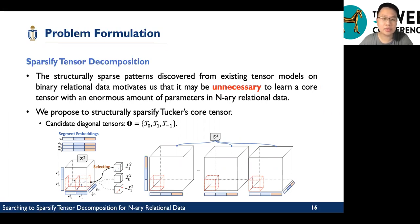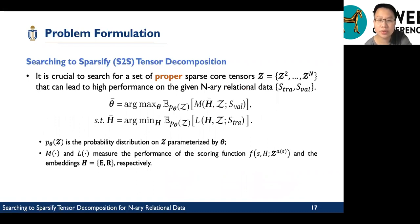First, we define a candidate diagonal tensors. The tensors only have non-zero values in the diagonal. And for each cube, we will select the proper diagonal tensors. We achieve the sparsity. Generally, it is crucial to search for a set of proper sparse core tensors z1, z2, z3.